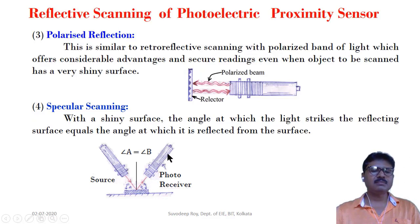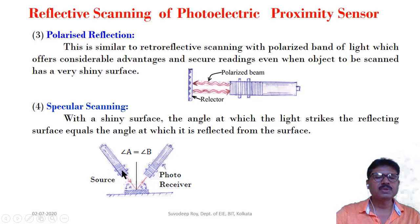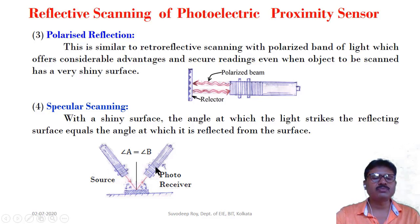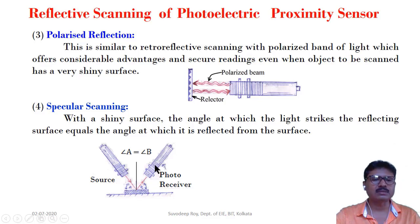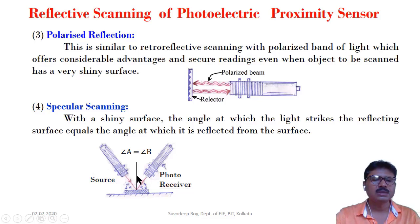Next is specular scanning. The orientation in specular scanning is very exact and tough to set up. The object to be detected has a shiny surface — the angle at which the light strikes the reflecting surface equals the angle at which it is reflected. This type of orientation is called specular scanning. The main requirement is that the incidence angle must equal the reflected angle.